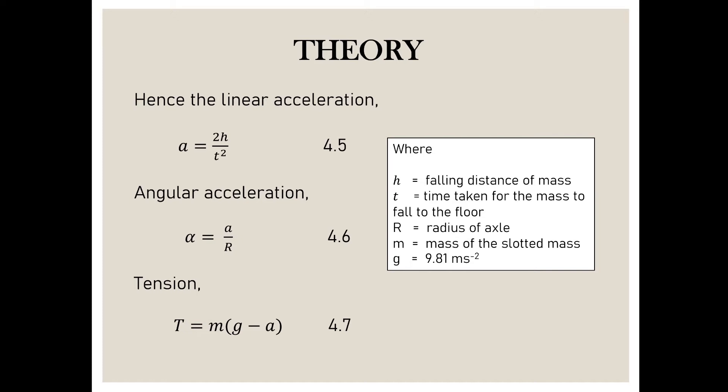Where h is the falling distance of mass, t is the time taken for the mass to fall to the floor, R is the radius of axle, M is the mass of slotted mass, and g equals 9.81 meters per second squared.